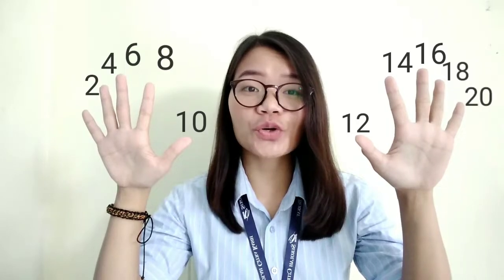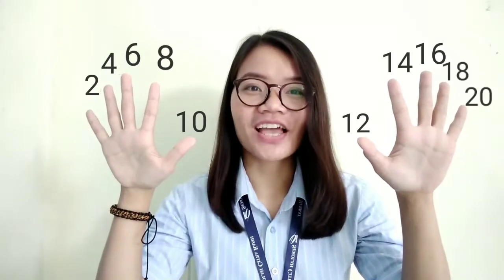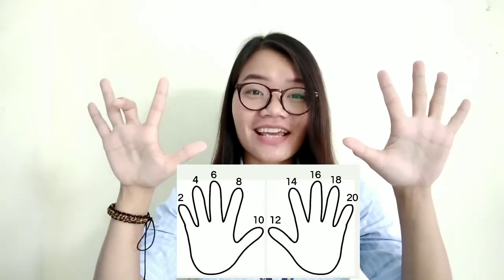Okay, so now let's try to do skip counting together. Show me your fingers like this. Are you ready everyone? We are going to try skip counting by 2: 1, 2, 3 — 2, 4, 6, 8, 10, 12, 14, 16, 18, 20.